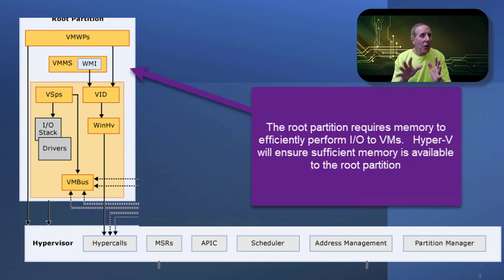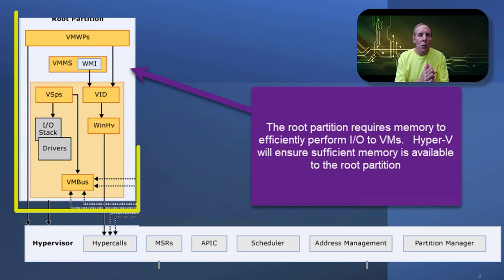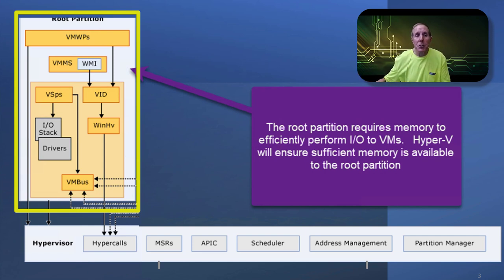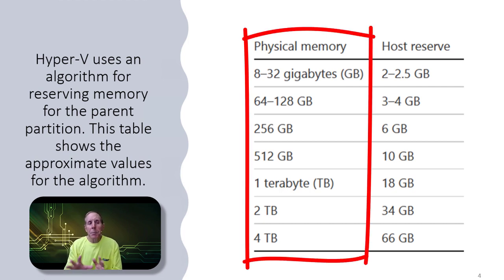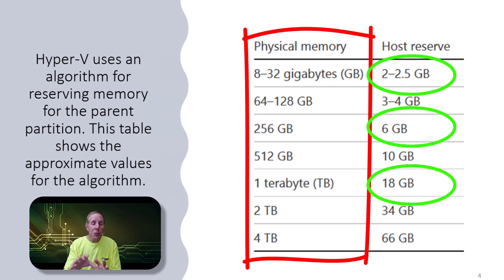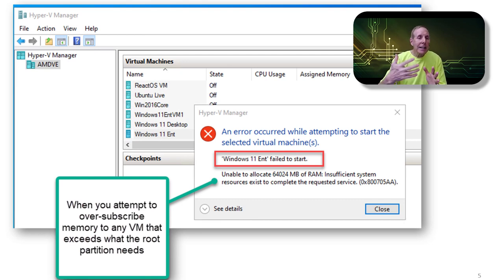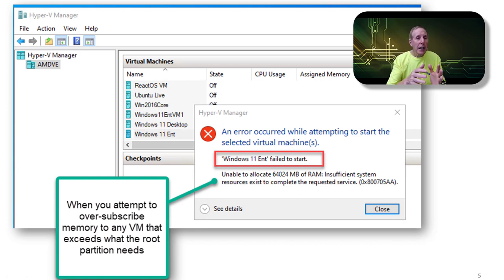Keep in mind, as we look back at architecture, the root partition plays a major role in the efficiency and performance of all the virtual machines. Hyper-V makes sure that the root partition has enough memory to efficiently maintain and run the VMs at the highest performance. You cannot starve the root partition without impacting all the virtual machines on the server. Here in this graphic, I attempted to give one virtual machine all the memory, and Hyper-V simply said no — it protects the root partition against you over-assigning memory.